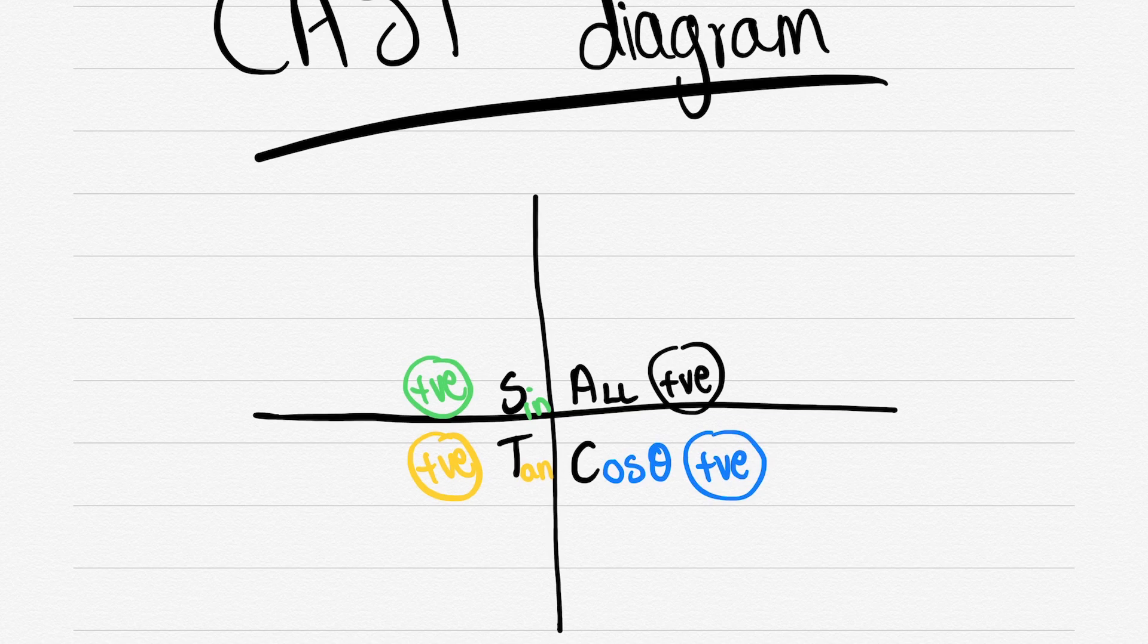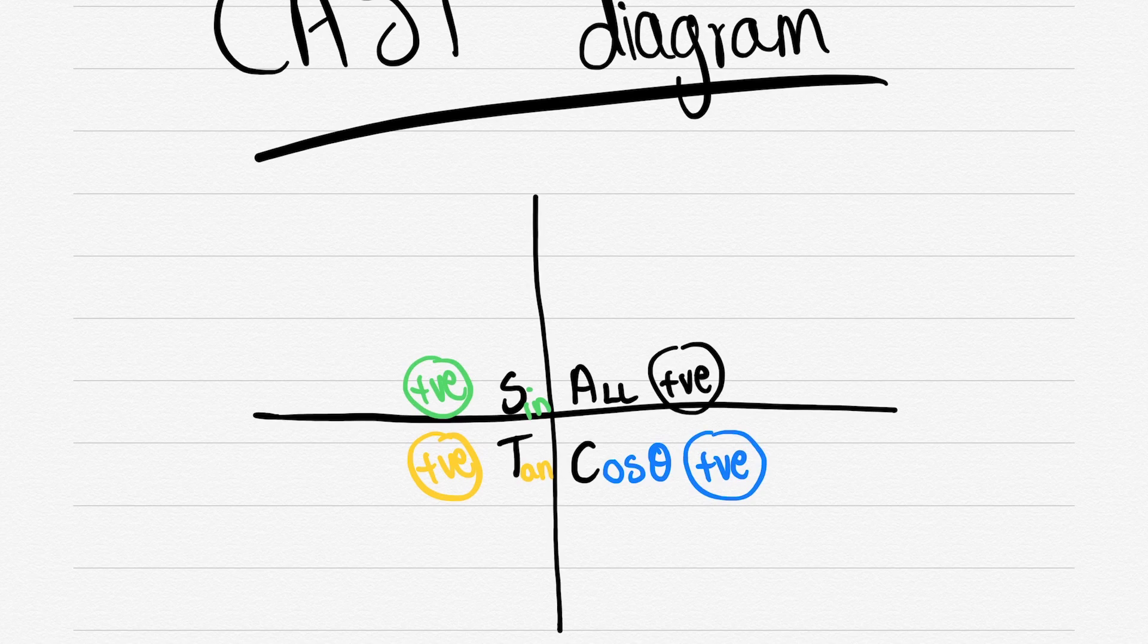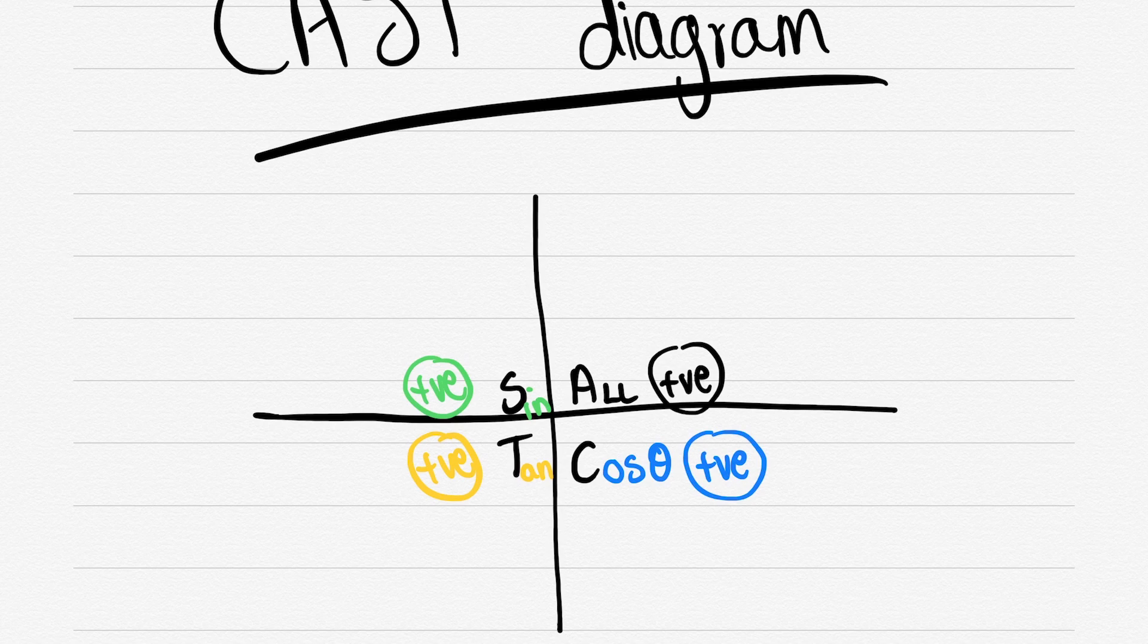You then look at tan bottom left. Any tan angles are actually positive in the bottom left hand quadrants. This has a lot to do with the Pythagorean theorem where you're looking at your x's, your y's and your r's.